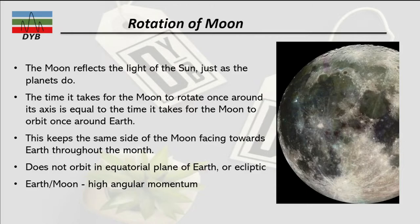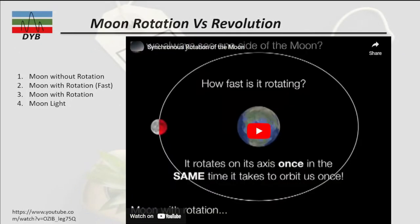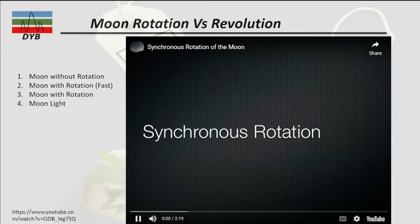Here is a short video showing moon rotation and revolution. I am presenting four cases: the first is the moon without rotation; the second is moon with rotation but at a faster speed; the third is the moon with exactly the correct rotation speed; and the fourth shows how light from the sun falls on the moon.